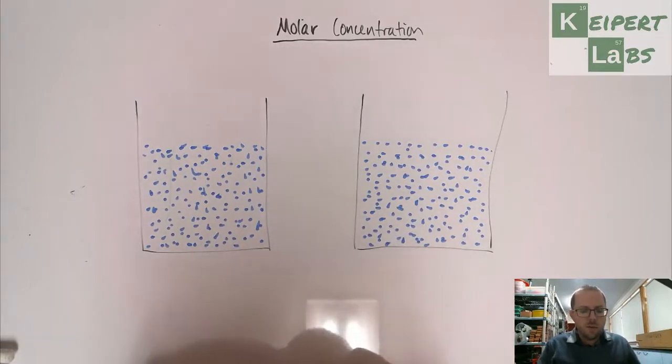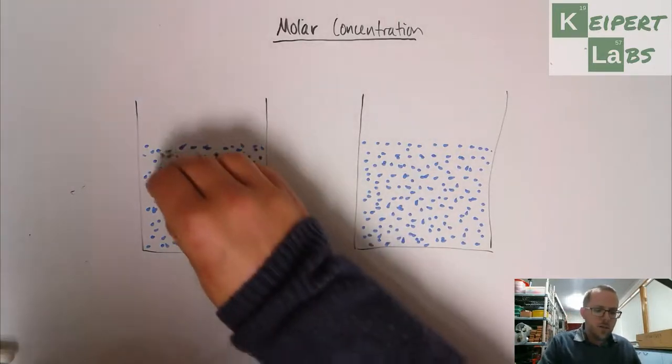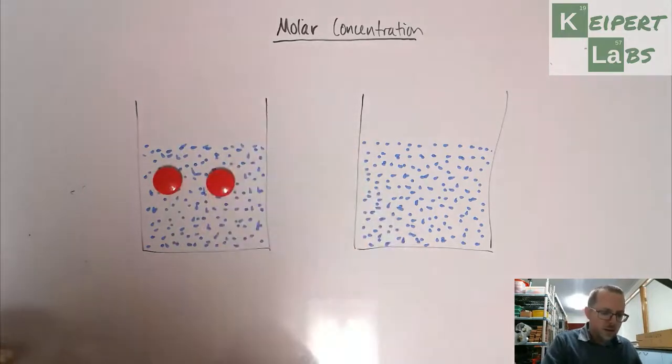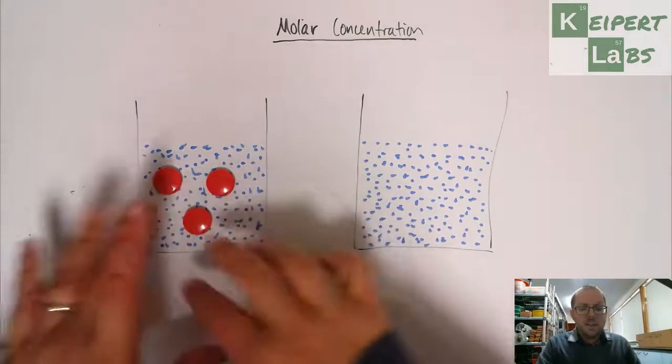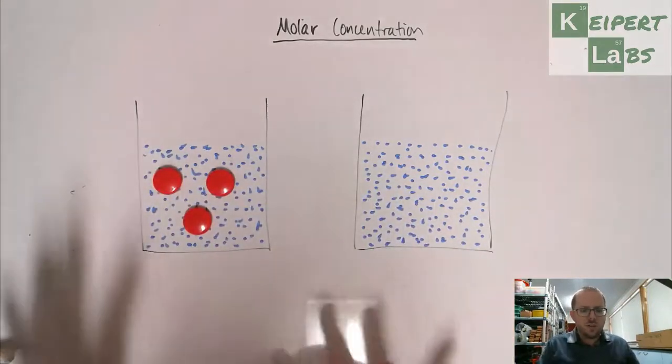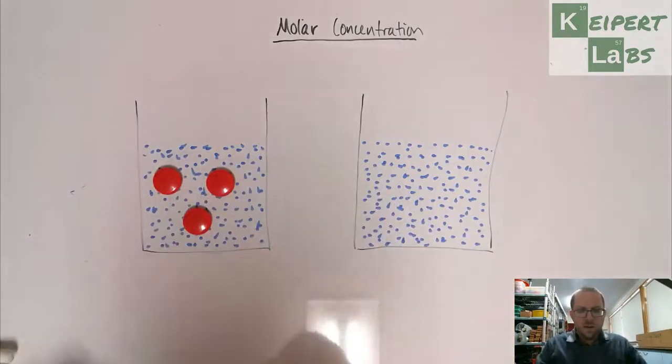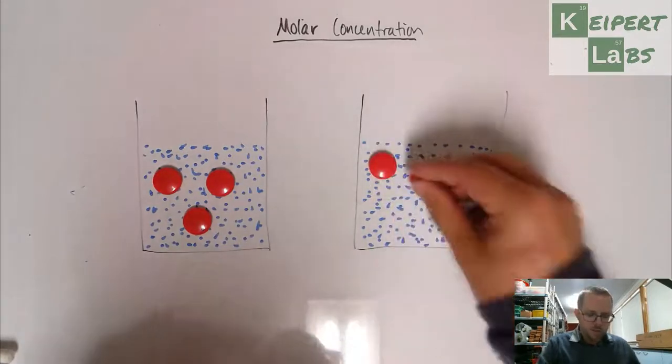So remember that we only had a few particles over on this side, so I'm going to represent that as these are the particles of potassium manganate mixed in evenly to the solution that we have here. Whereas this is the one that we have which is much more concentrated.